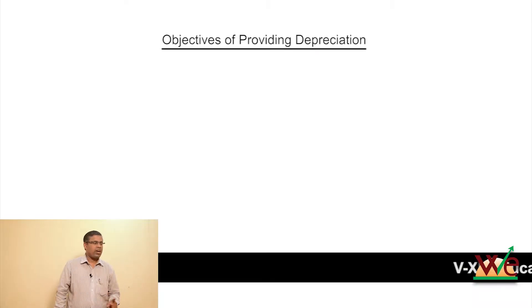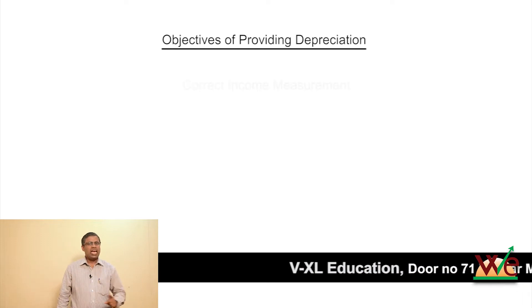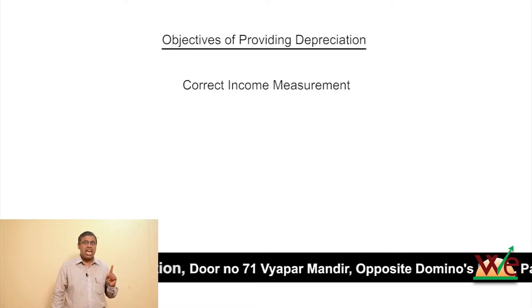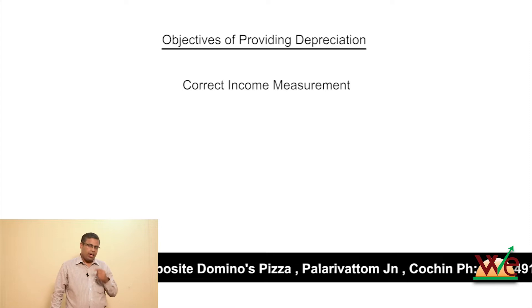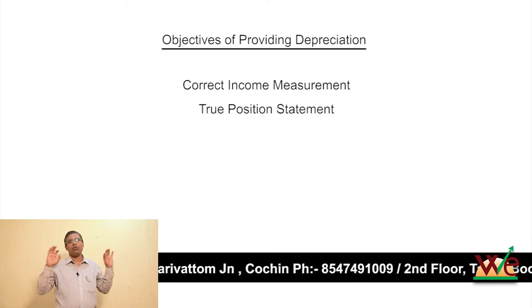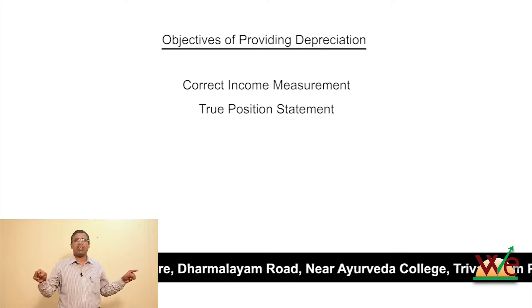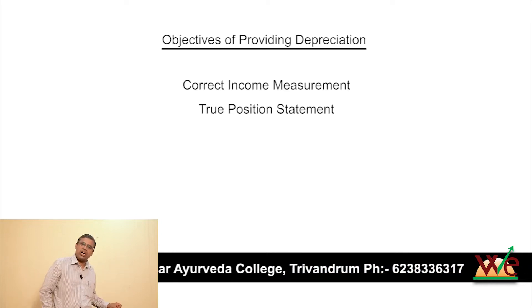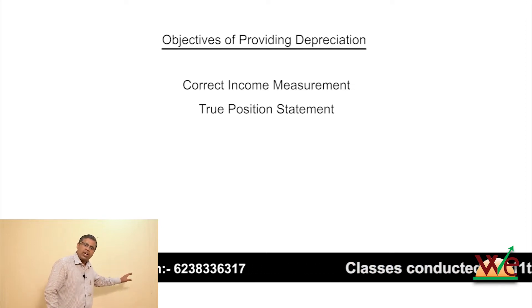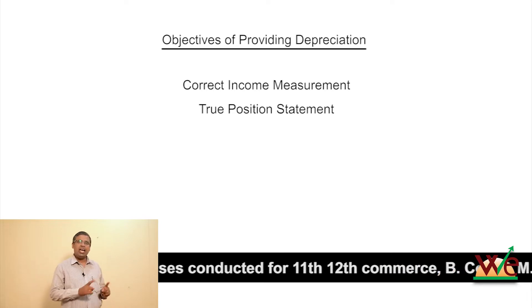When we provide depreciation, we need objectives. First is the correct determination of profit. Second, we need to show a true and fair view of the financial position — showing the correct asset values, liabilities, and capital on the balance sheet, including plant and machinery at their correct values.